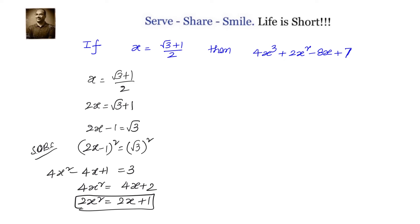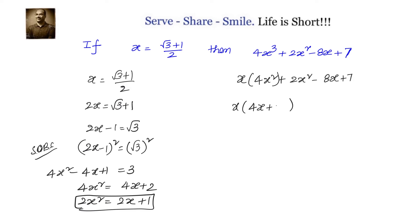Now, we look at what we need to find, and wherever x squared appears, we will try to write it in terms of x. We write 4x cubed as x times 4x squared, giving the full expression as x times (4x squared) plus 2x squared minus 8x plus 7. Since 4x squared equals 4x plus 2, we substitute: x times (4x plus 2) plus 2x squared minus 8x plus 7.